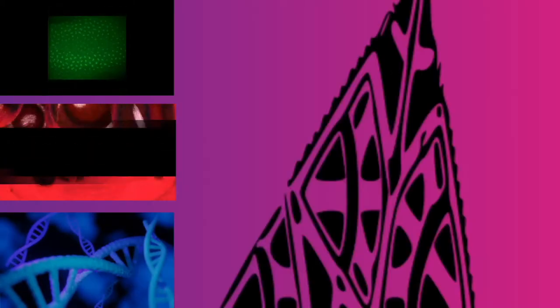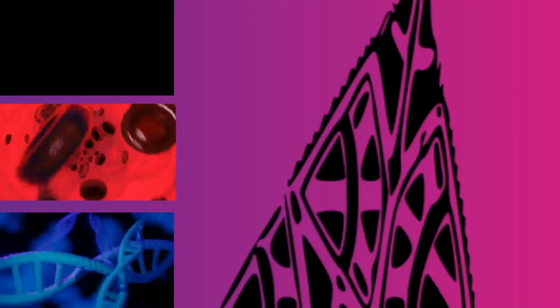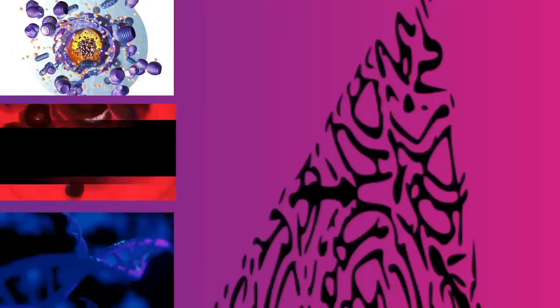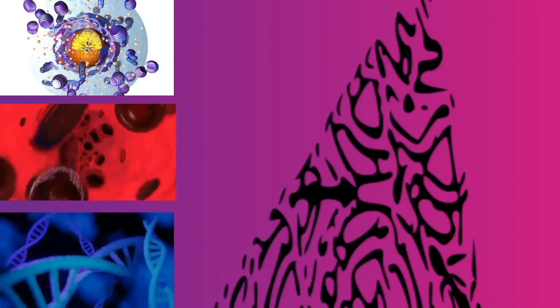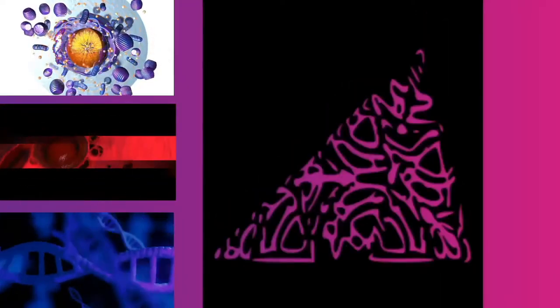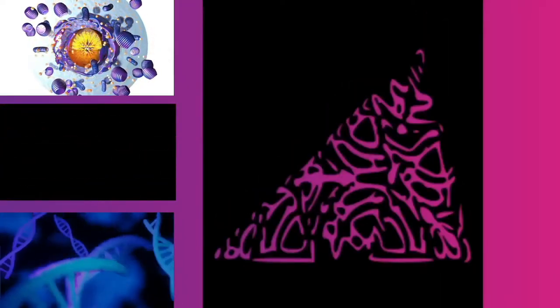All animals are eukaryotic. Animal cells are distinct from those of other eukaryotes, most notably plants, as they lack cell walls and chloroplasts, and have smaller vacuoles. Due to the lack of a cell wall, animal cells can transform into a variety of shapes. A phagocytic cell can even engulf other structures.